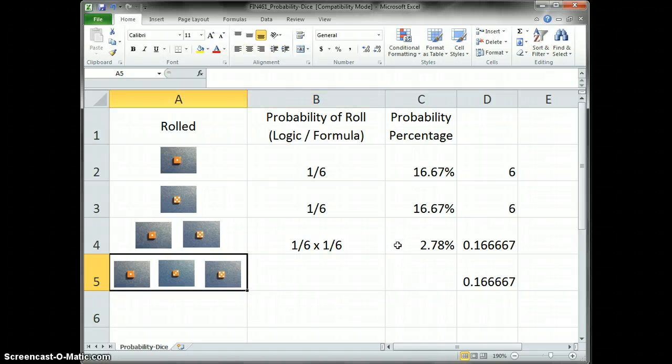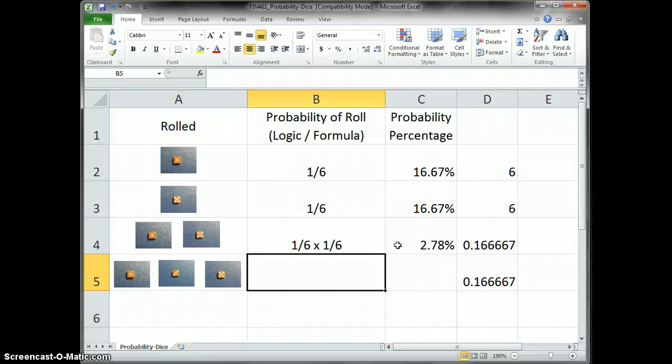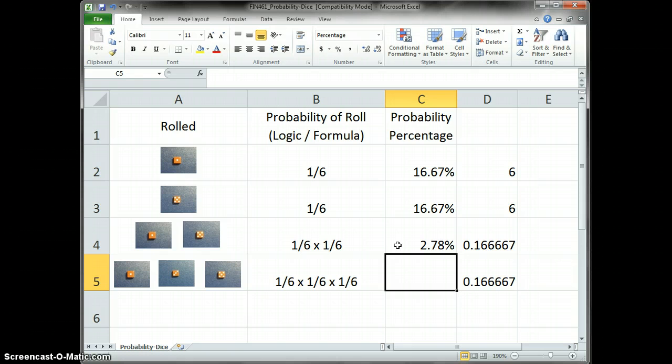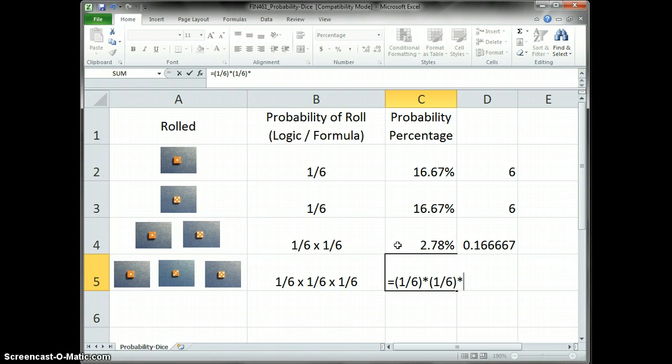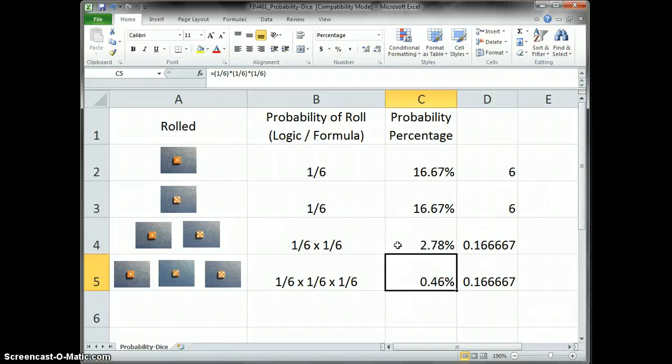Because to roll a 1, 3, and a 5 using three dice, and them landing on the 1, 3, and 5 in one drop, the logic is 1 over 6 times 1 over 6 times 1 over 6. So now when we do this particular math, just to make certain that you're cognizant of the order of operations in calculating this. So the probability of rolling a 1, 3, 5 in a three dice combination on the first drop is a little less than a half of 1% chance.